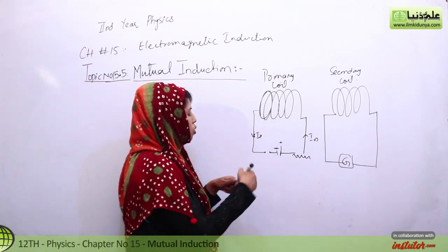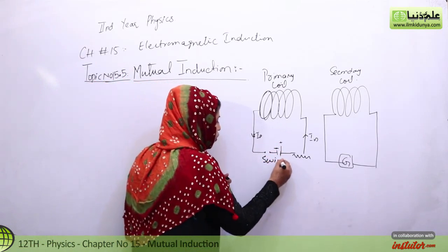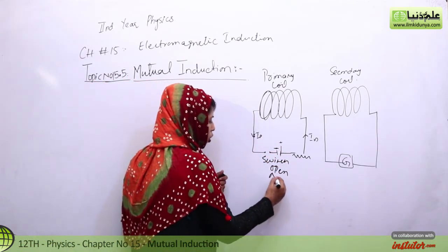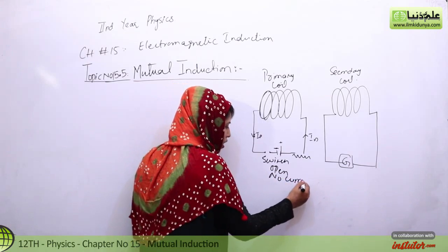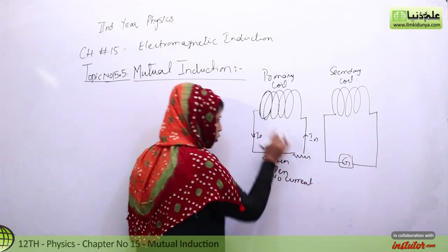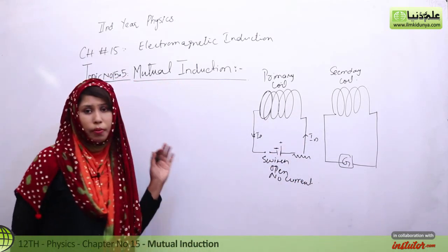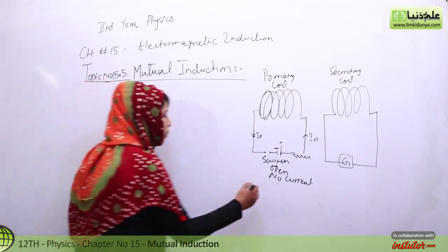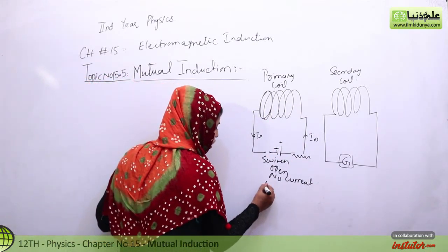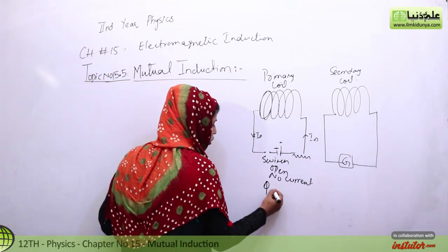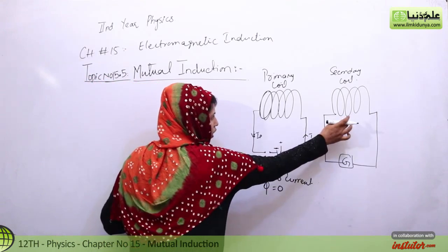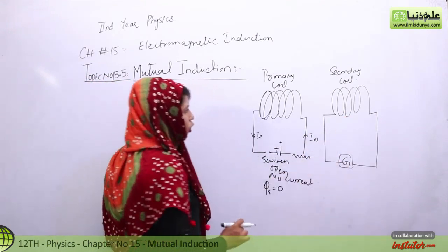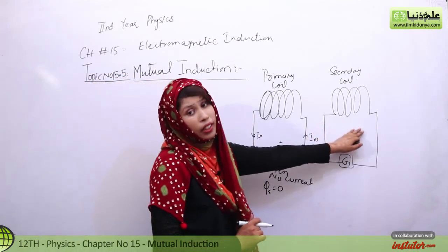In the beginning, when we have a switch here, the switch is open. Switch open means no current. There is no magnetic field here. The number of magnetic field lines is zero, so we have magnetic flux equal to zero in this coil. Because we have put a galvanometer here, so we will see all the readings here.